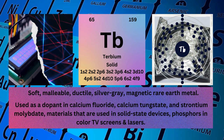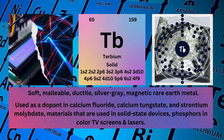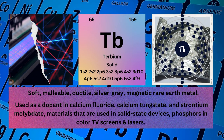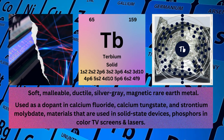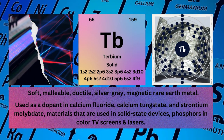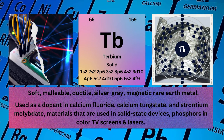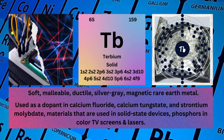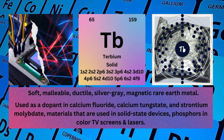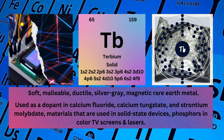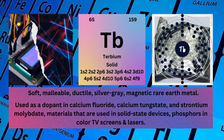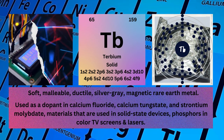Electronic configuration: 1s²2s²2p⁶3s²3p⁶4s²3d¹⁰4p⁶5s²4d¹⁰5p⁶6s²4f⁹. Physical properties: Soft, malleable, ductile, silver-gray, magnetic rare earth metal.